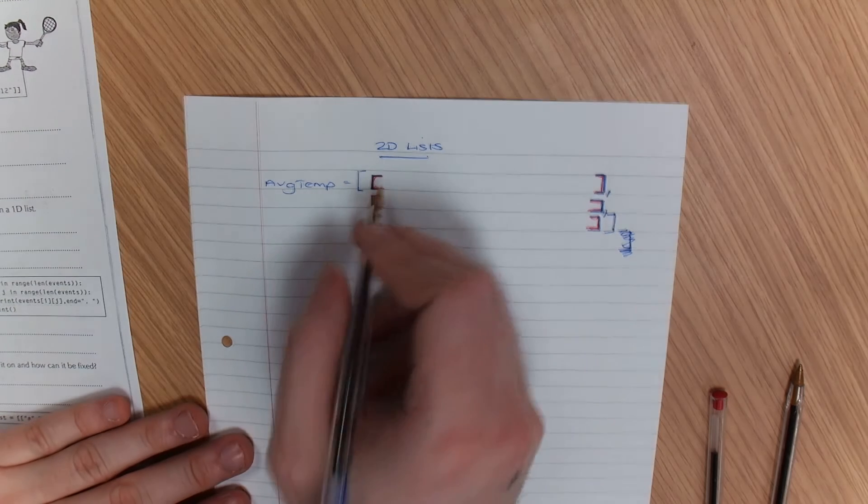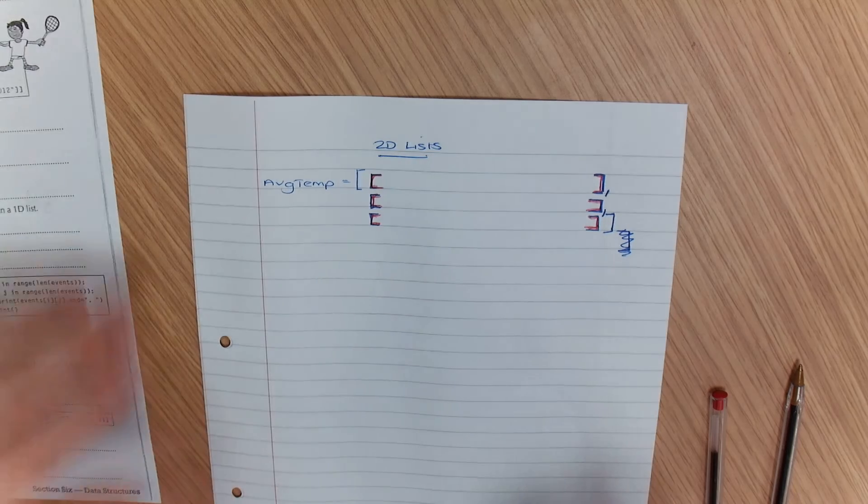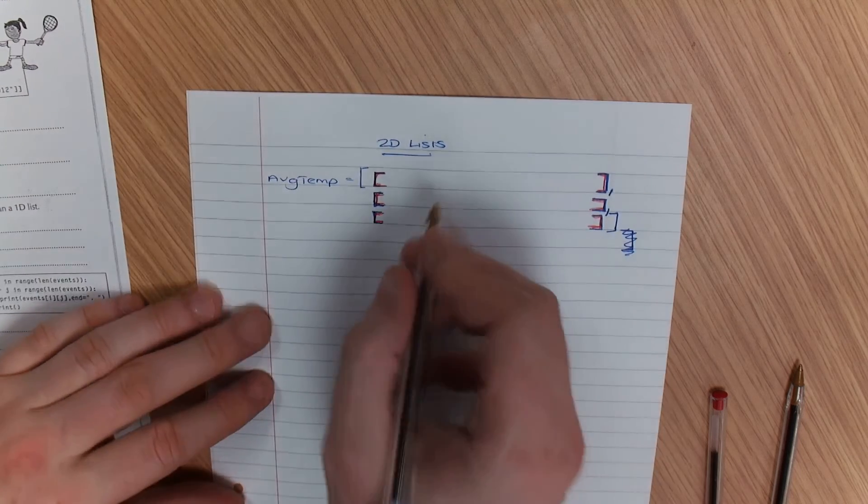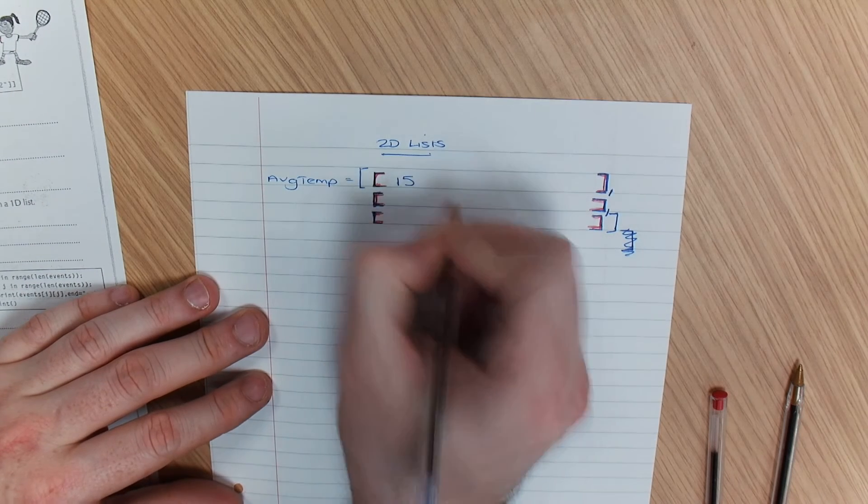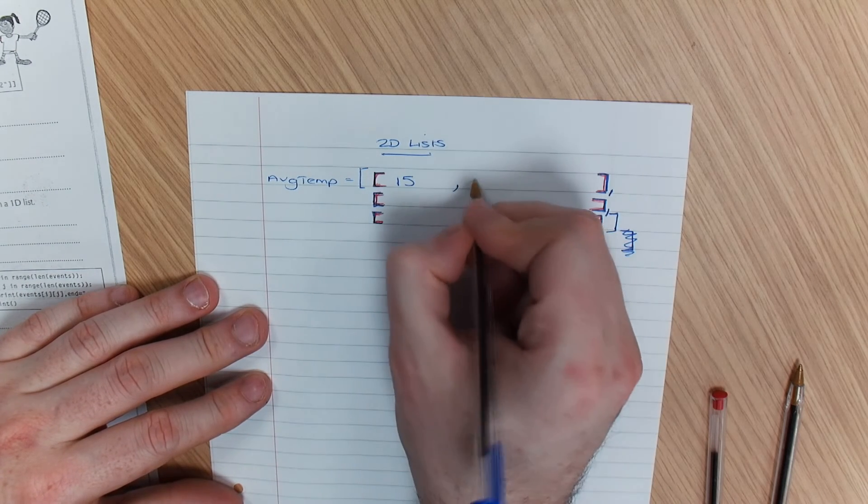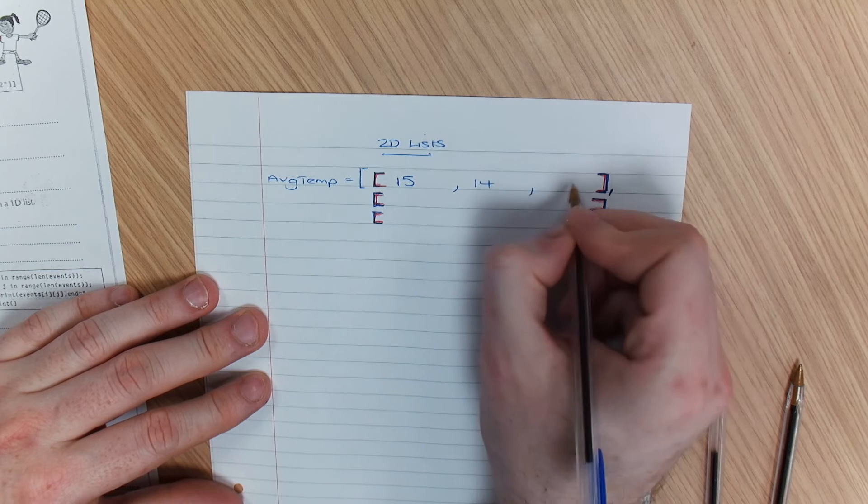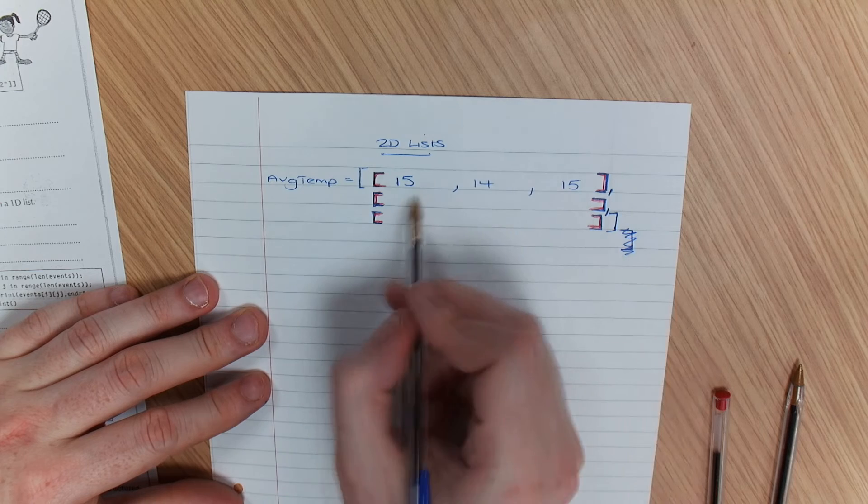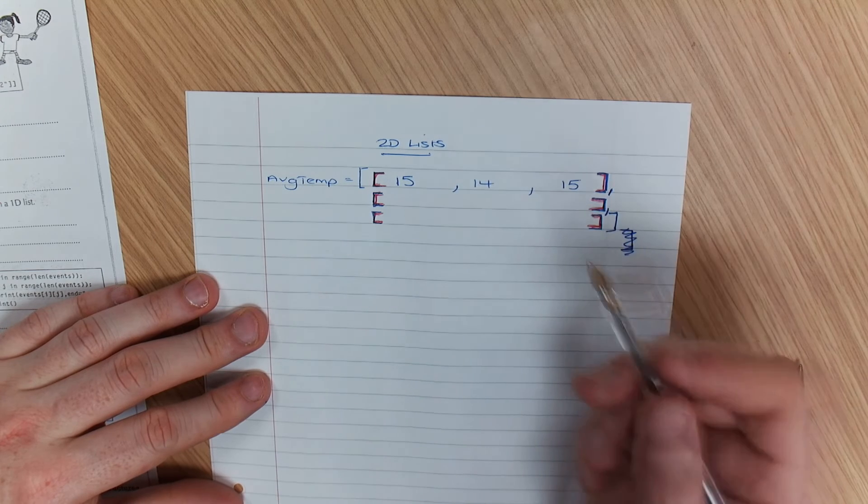So what I've got here is I'm going to put these values in. I'm going to put 15, 14, 15. So that would be row 1. That's like a single list, which we've looked at before.